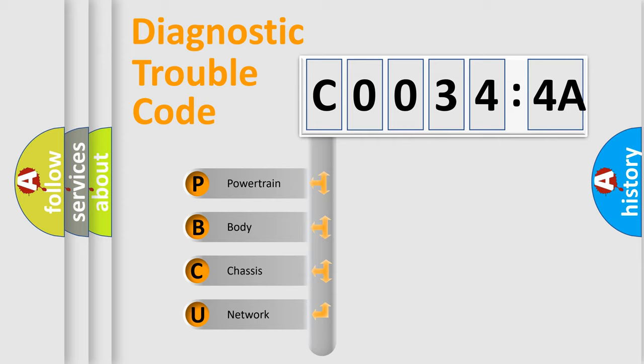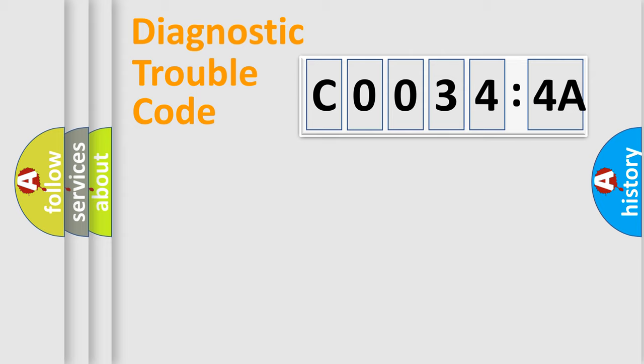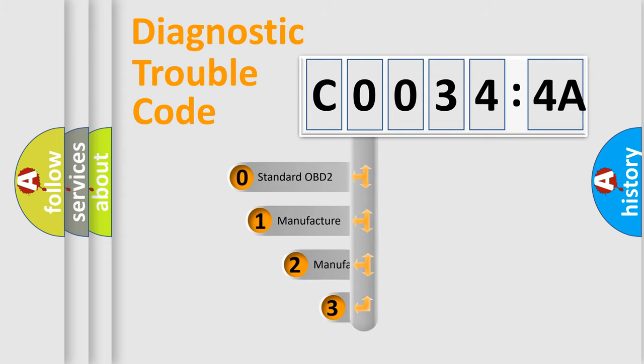We divide the electric system of automobile into four basic units: Powertrain, Body, Chassis, and Network. This distribution is defined in the first character code.